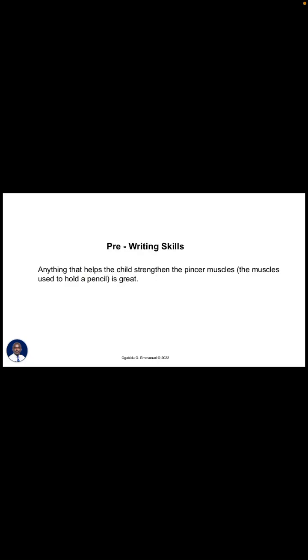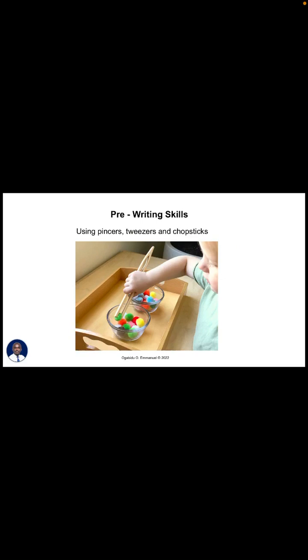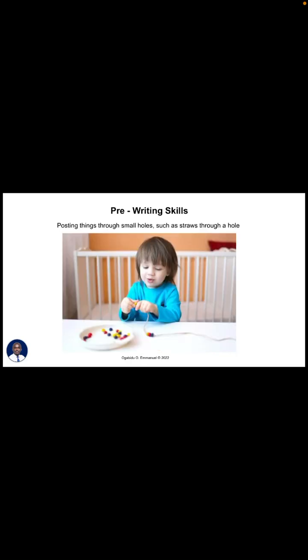Anything that helps a child strengthen the pencil muscles — the muscles used to hold a pencil — is key at this stage. During daily living activities children refine motor skills they need to write. Activities that refine fine motor skills include knob cylinders and puzzles, using pincer tweezers and chopsticks. Even eating with a spoon helps children refine their hands and fine motor skills.